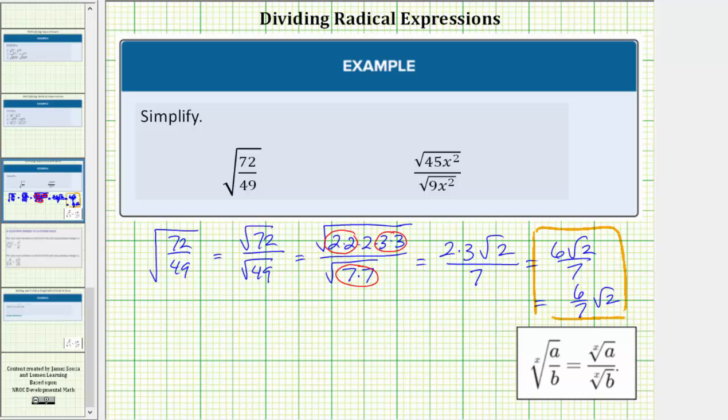Looking at the second example, we have the square root of 45x² divided by the square root of 9x². So we could take the same approach and simplify the top and bottom separately, but we can save some time if we recognize that the fraction 45x² divided by 9x² simplifies nicely.